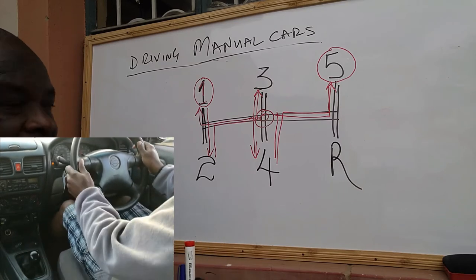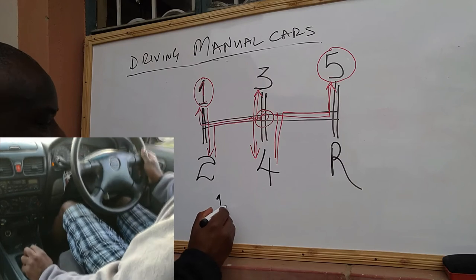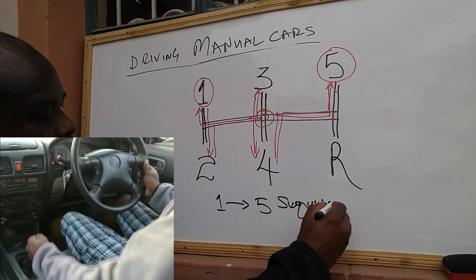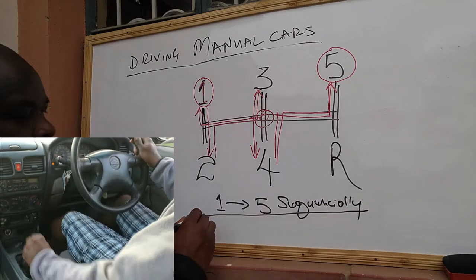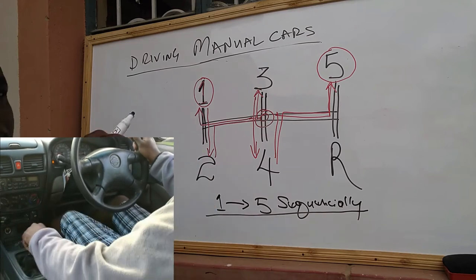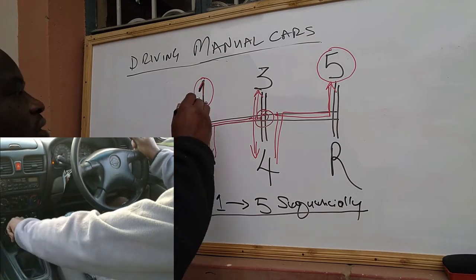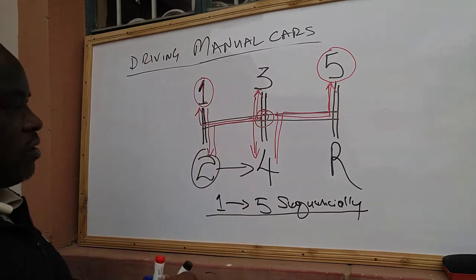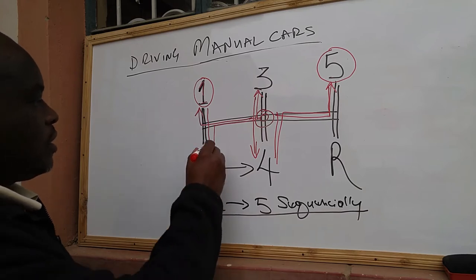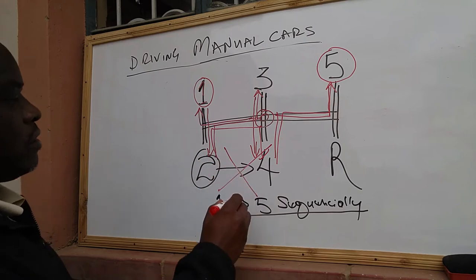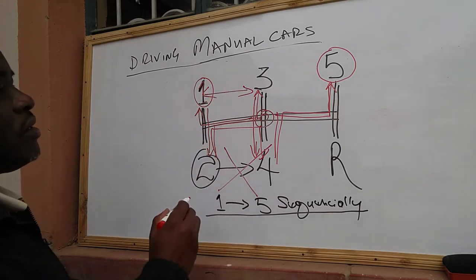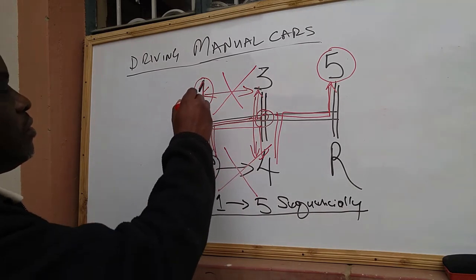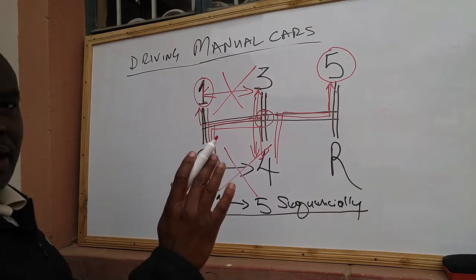You shift your gears from number one to number five sequentially. You are not supposed to skip gears. For instance, you cannot move from number two to number four — this is wrong. You cannot jump gears. You cannot go from number one to number three, or number three to number one. That is wrong.